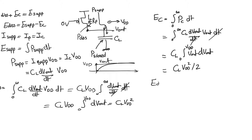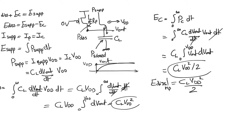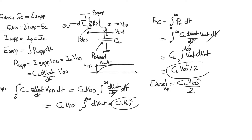The energy dissipated in the PMOS equals energy drawn from supply minus energy stored in the capacitor: C_L · V_DD² − C_L · V_DD² / 2 = C_L · V_DD² / 2. As we charge up the capacitor, we draw C_L · V_DD² from the supply, store half in the capacitor, and burn half in the PMOS resistance. Importantly, the amount of power burnt in the PMOS resistance is independent of the value of the PMOS resistance — it depends only on V_DD and C_L, not on the instantaneous resistance of the MOSFET.